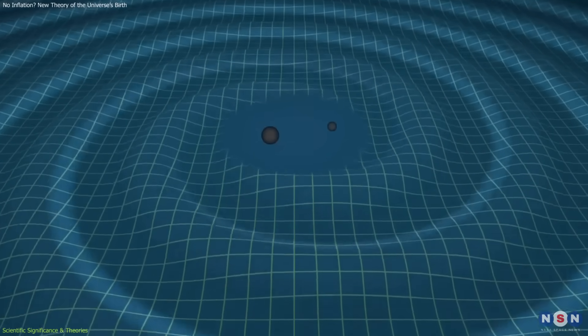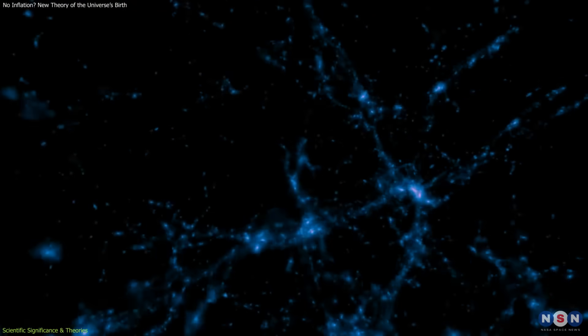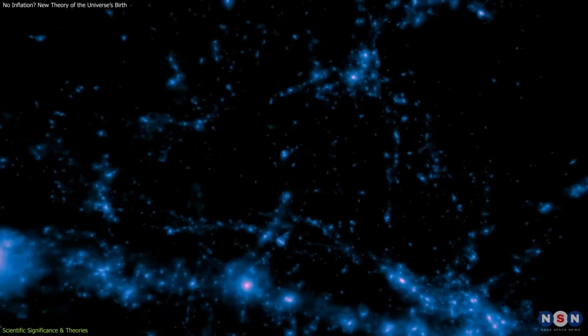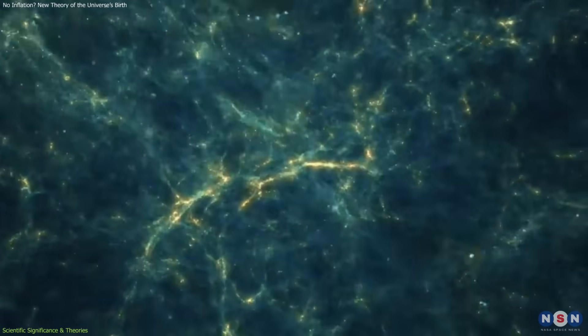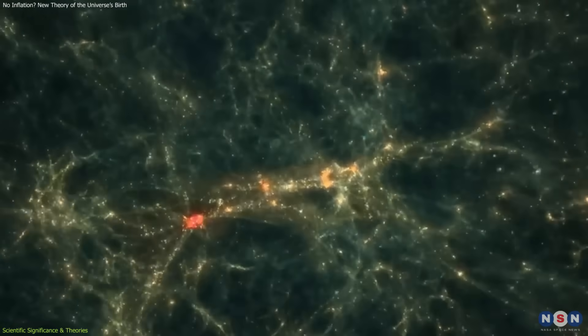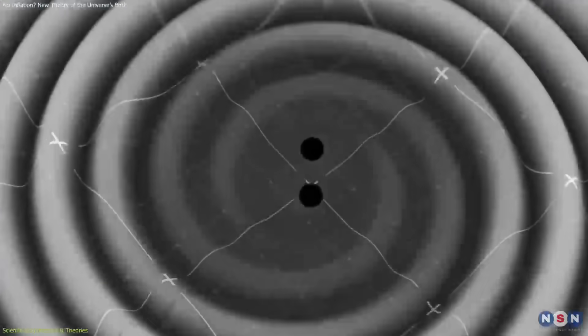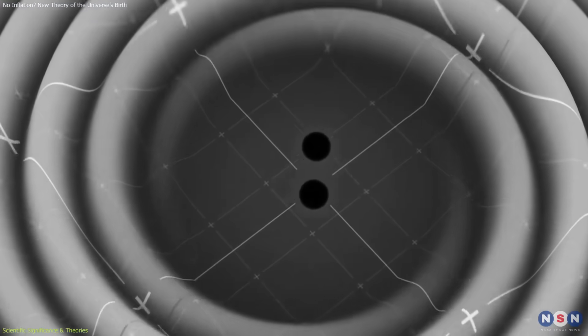The gravitational wave approach suggests that the statistical distribution of cosmic fluctuations arises directly from second-order effects. That makes the model self-contained. No extra parameters, no hypothetical particles. Just relativity and quantum mechanics working together.